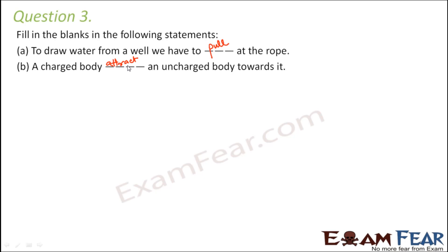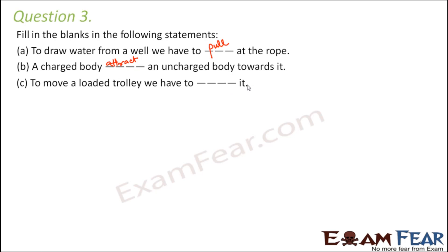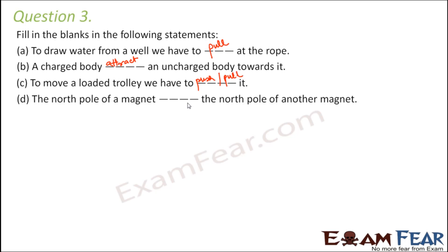Like the example of a balloon rubbed on a cloth — it acquires charge and can attract small pieces of paper, which are uncharged objects. 'To move a loaded trolley, we have to dash it' — you either need to push it or pull it. 'The north pole of a magnet dashes the north pole of another magnet.' North and north are like poles, and like poles repel each other, so they tend to go away from each other.